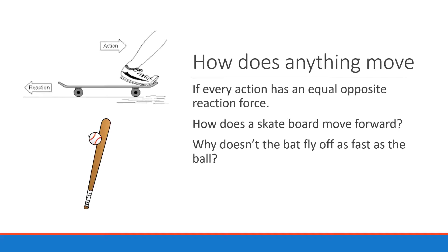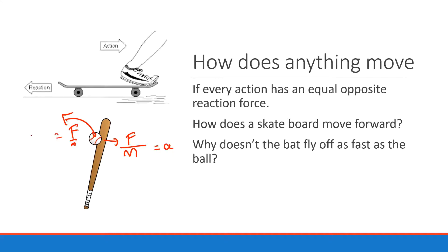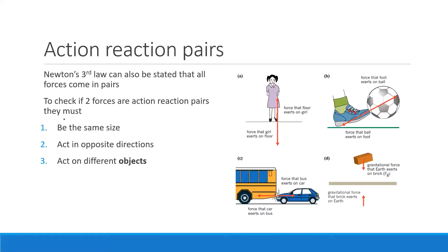The acceleration of the ball is going to be a lot higher than the acceleration of the bat. Even though the force is the same, because the mass of the ball is so tiny in comparison, if you divide by a small number it makes a large acceleration. Newton's Third Law: it's the same force, but it has to act on different objects.